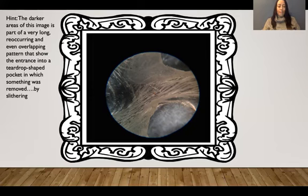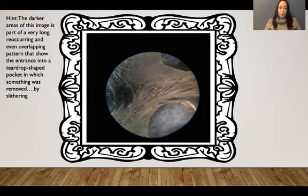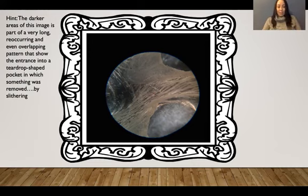Okay, and there is your hint. The darker areas of this image are part of a very long, reoccurring, and even overlapping pattern that shows the entrance into what is considered maybe an upside-down teardrop-shaped pocket, in which something was removed, possibly by slithering and movement. Hopefully that's what you can get from this and you can make a somewhat good guess. If you guys got it, I'm very happy.